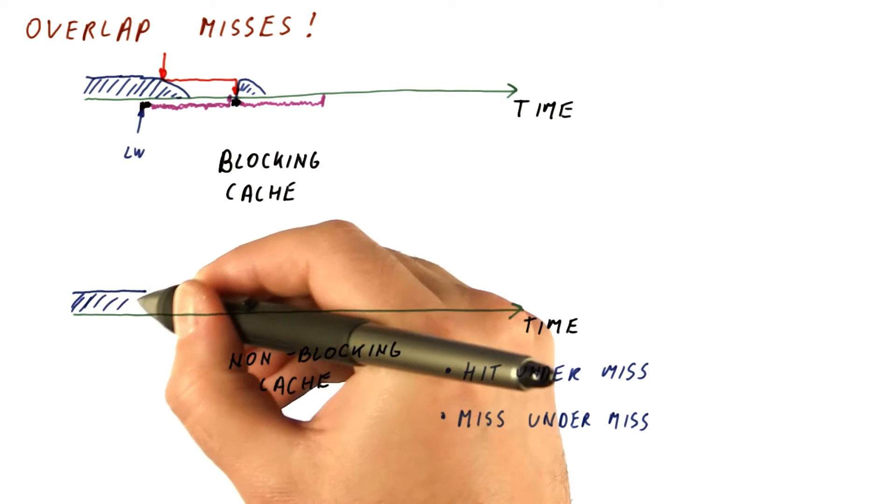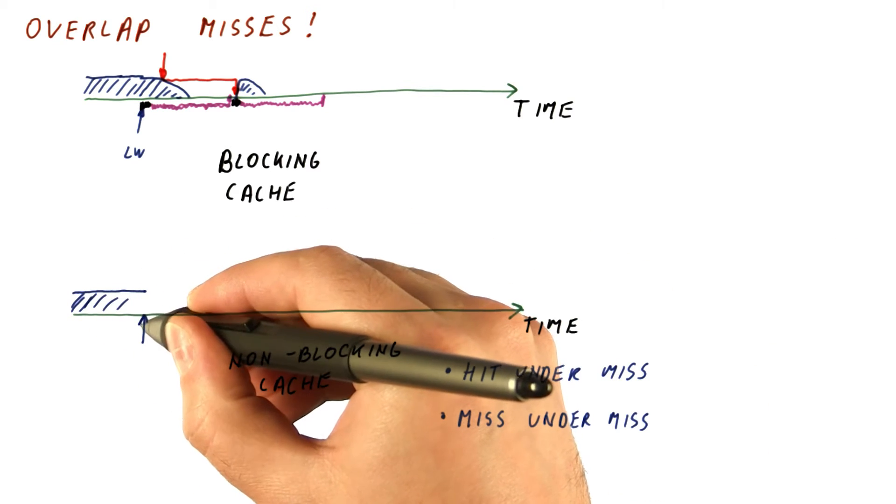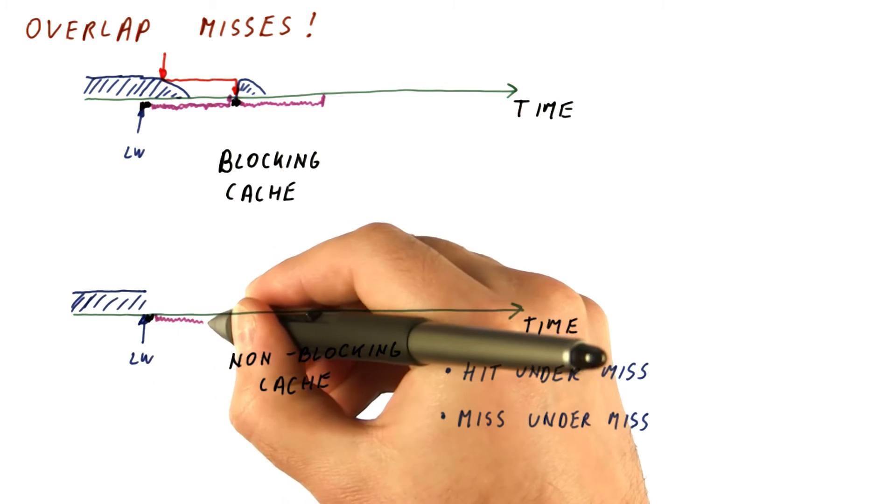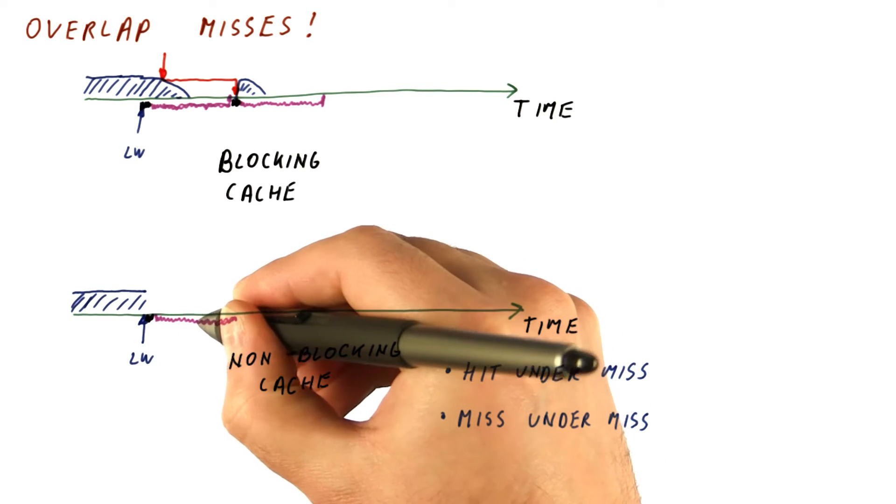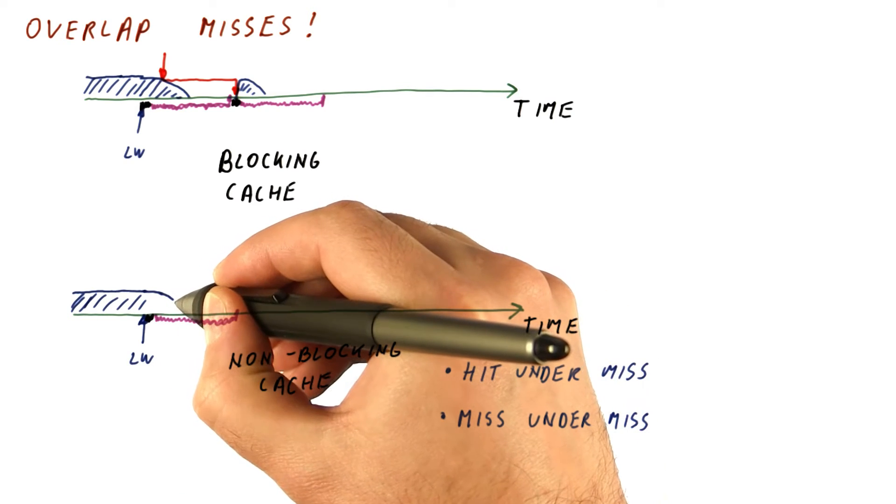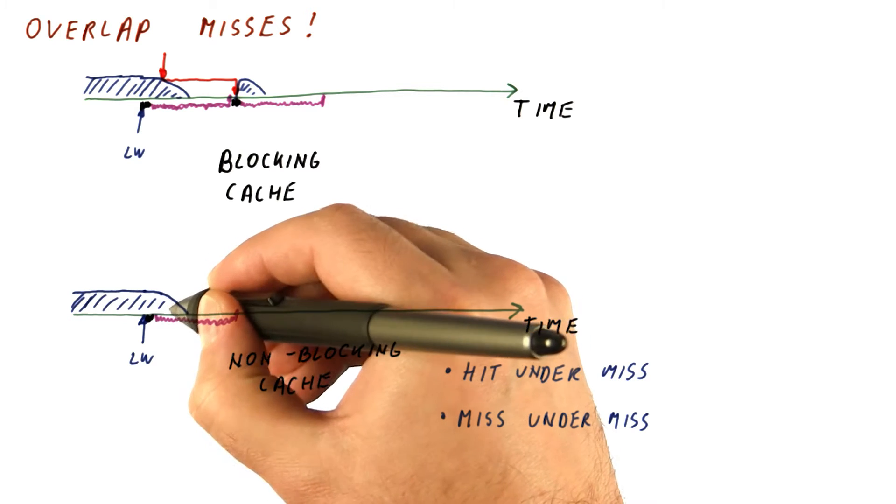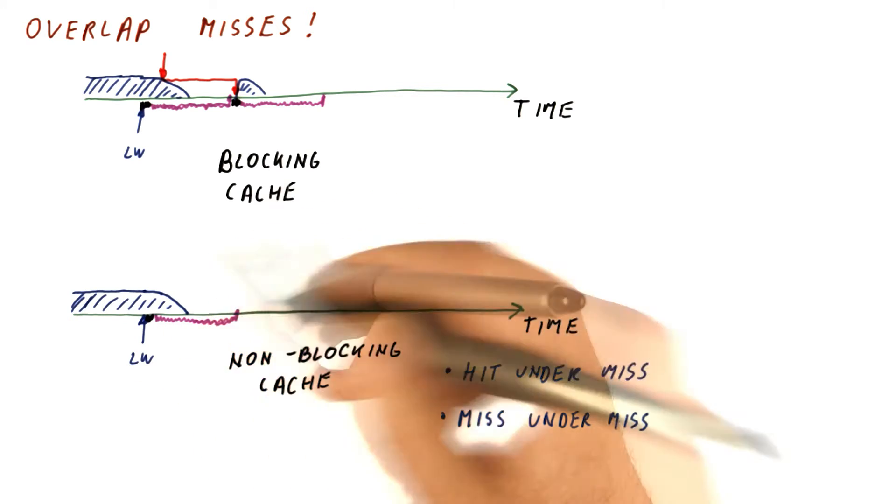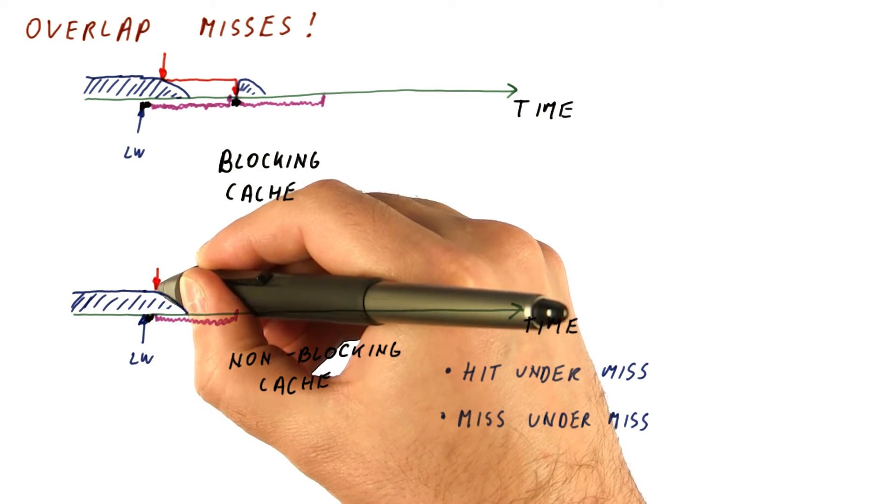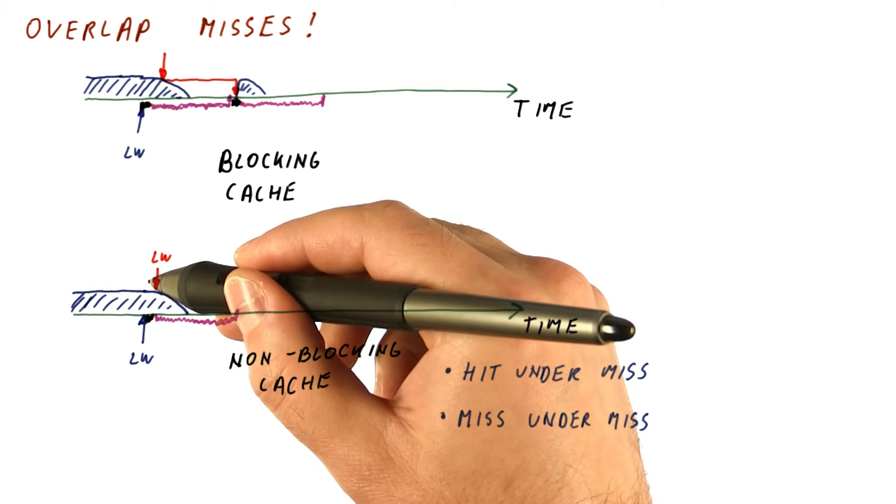So our processor is happily chugging along. It has this first load that suffers a miss. We check in the cache. We wait for it to come back from memory. We continue working and eventually run out of things to do because they depend on this first load. But the idea is that now this load here, that also suffers a miss, will have its own check in the cache.